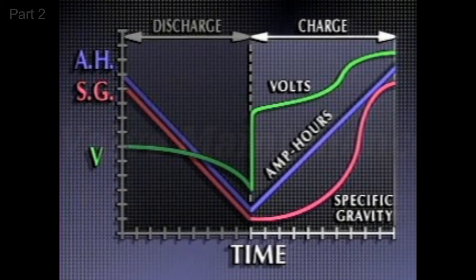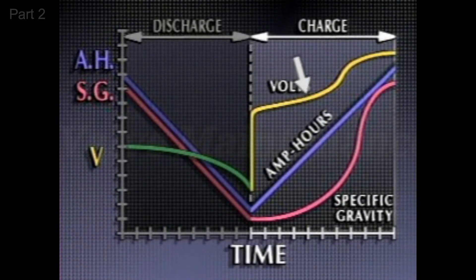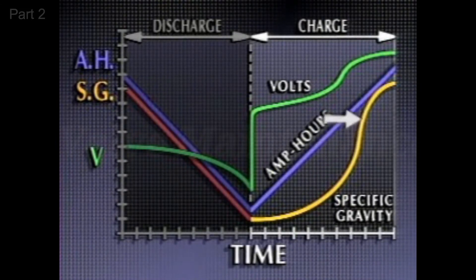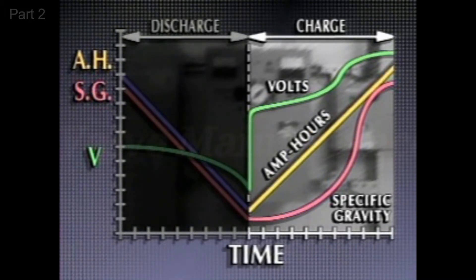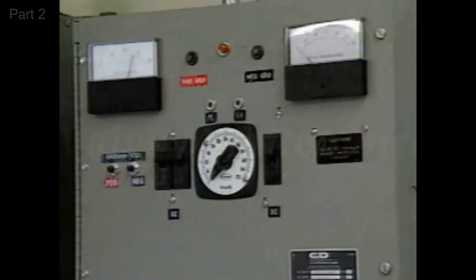However, when the cell is recharging, cell voltage and specific gravity change at irregular rates. Cell voltage jumps instantly and then gradually increases until it matches the output voltage of the battery charger. Cell specific gravity increases gradually as sulfuric acid is driven off the cell plates and mixed with the electrolyte. It may take weeks or even months for the sulfuric acid to thoroughly mix with the electrolyte and for the specific gravity to return to its normal value. Because cell voltage and specific gravity change at irregular rates when the cell is recharging, they are not reliable indicators of cell ampere hour capacity during recharging.